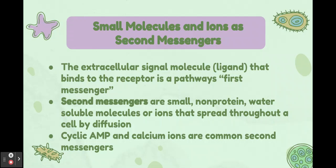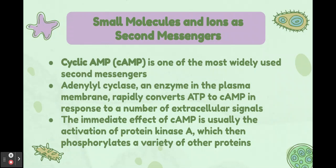Small molecules and ions can act as second messengers. The extracellular signal molecule — the ligand — that binds to the receptor is the pathway's first messenger. Second messengers are small, non-protein, water-soluble molecules or ions that spread throughout a cell by diffusion — the movement of molecules from high to low concentration. Cyclic AMP (cAMP) and calcium ions are common second messengers. Cyclic AMP is one of the most widely used second messengers.